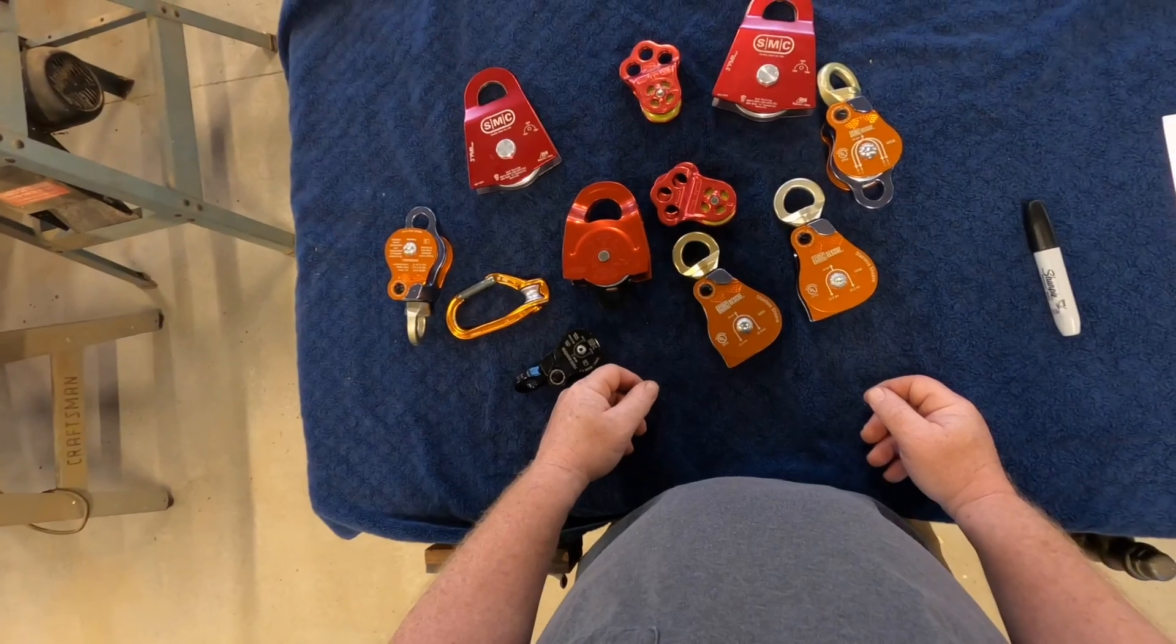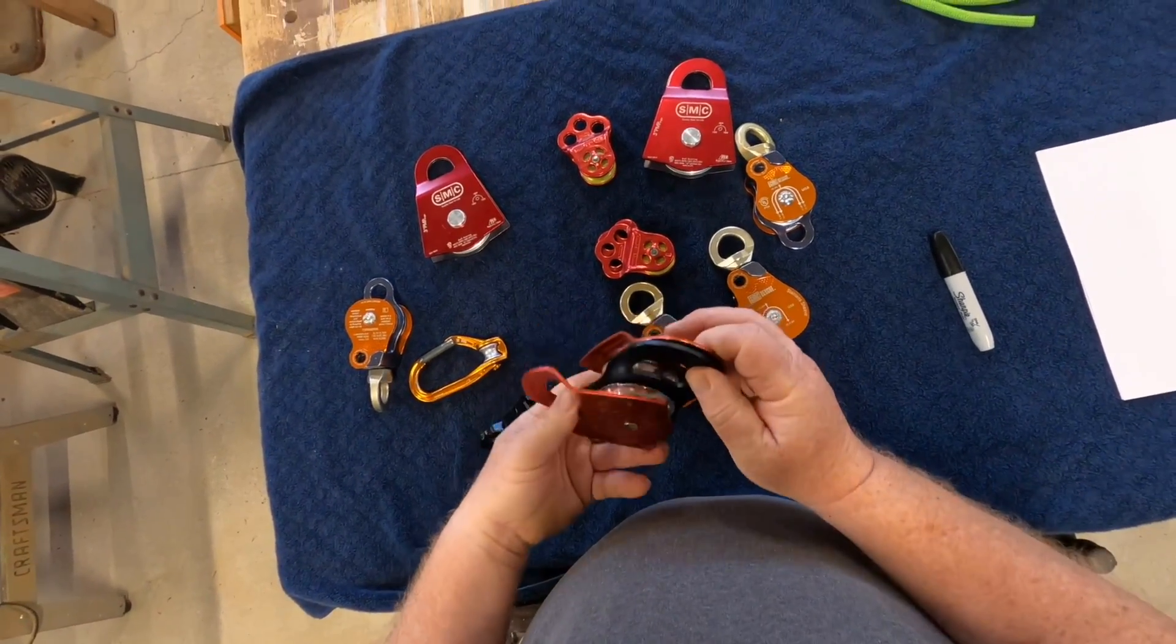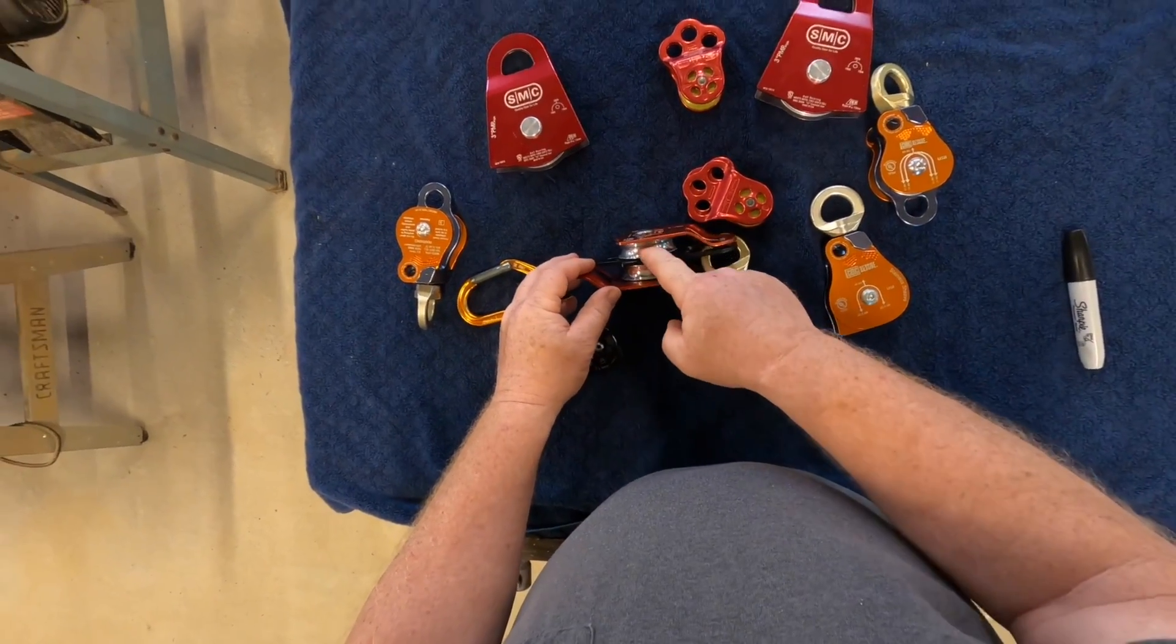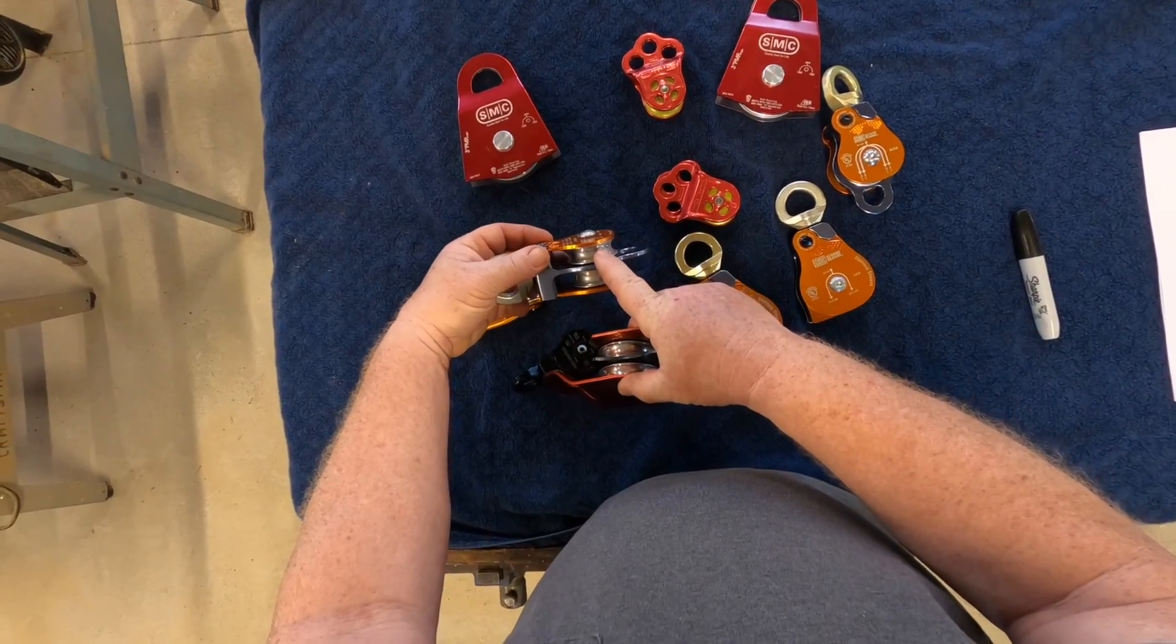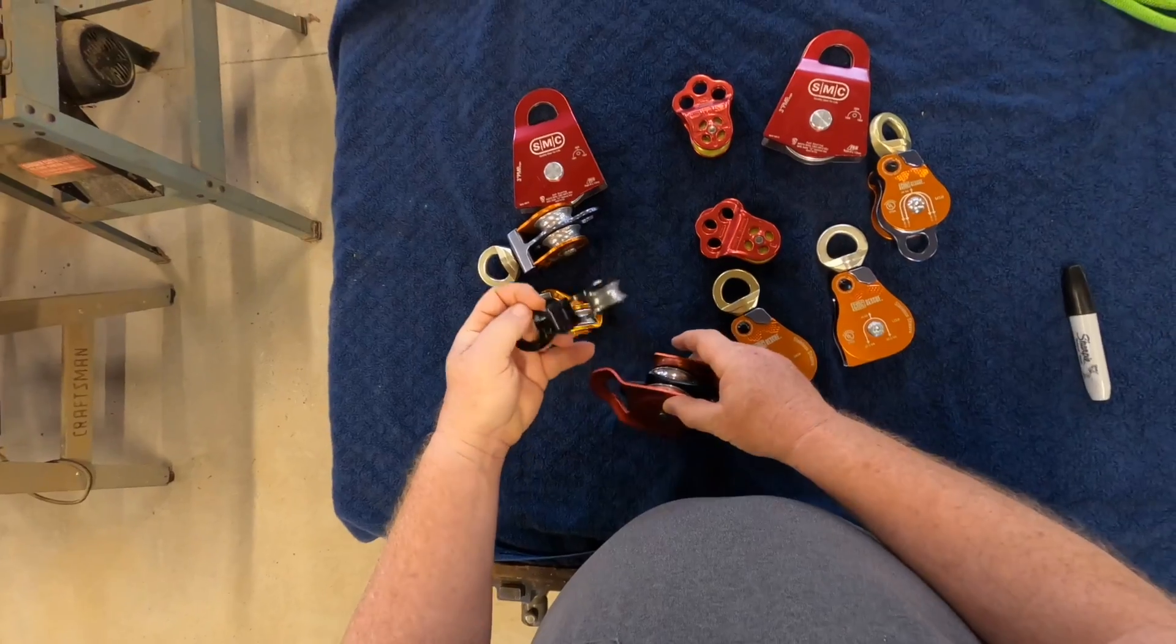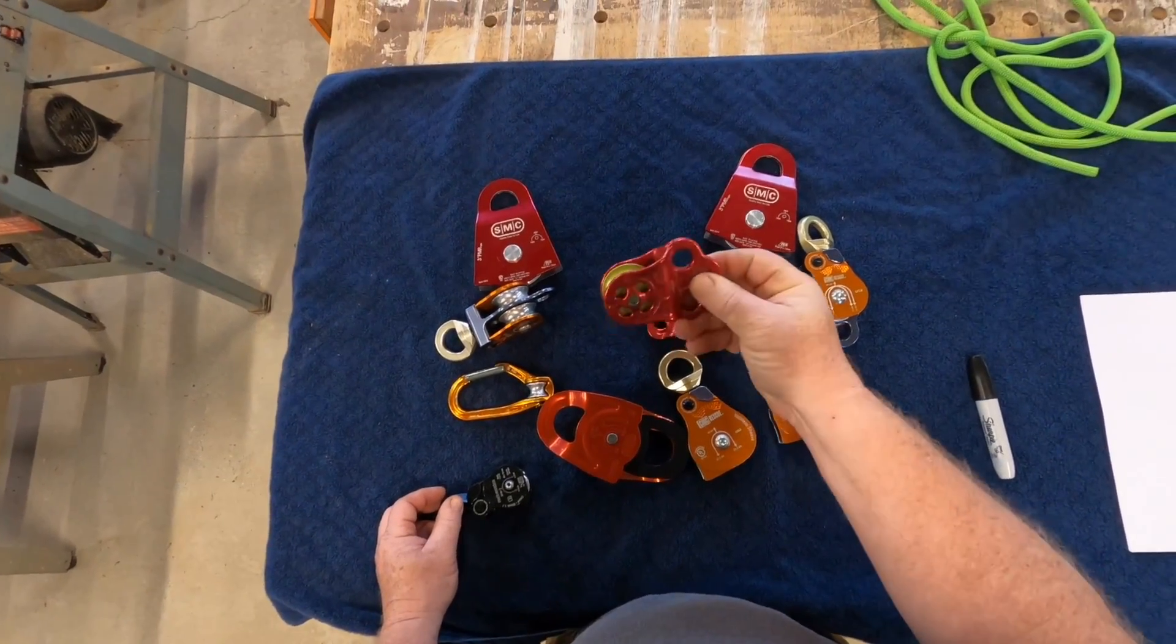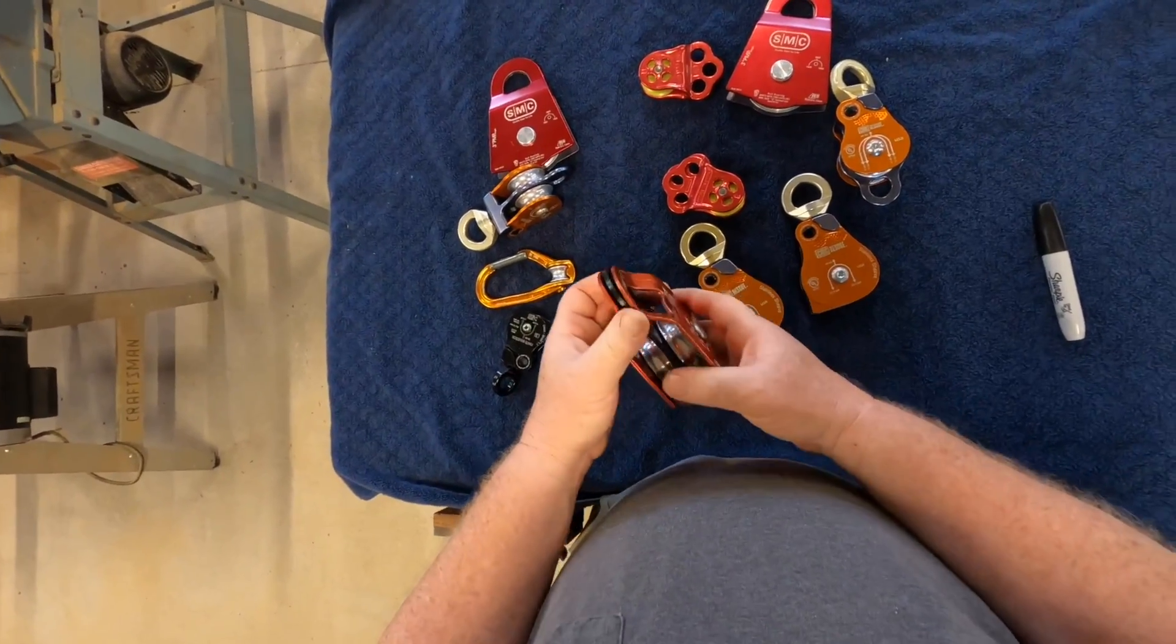The other distinction to make is how big of a pulley do I need? Basically when you size a pulley, you're looking at the sheave in here. This has a two-inch pulley wheel. This has an inch and a half. This one here has about five-eighths of an inch. And this one here has an inch. And this one here, I think it's about an inch and a quarter, something like that.